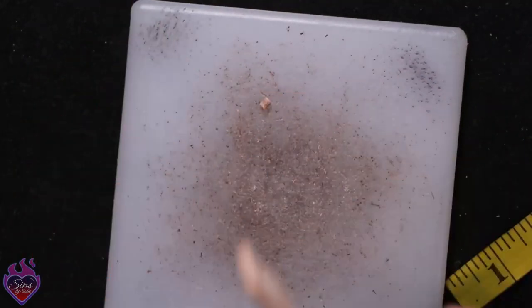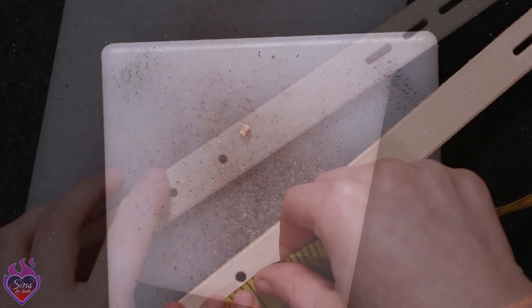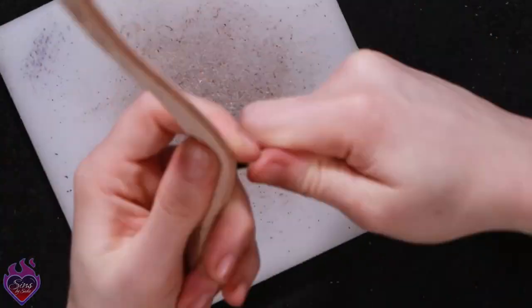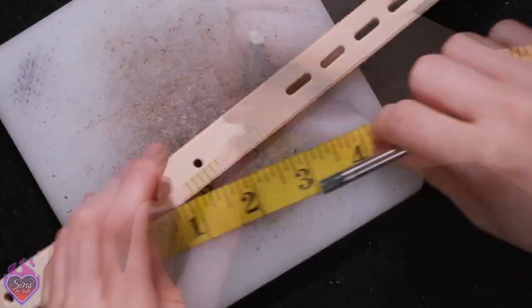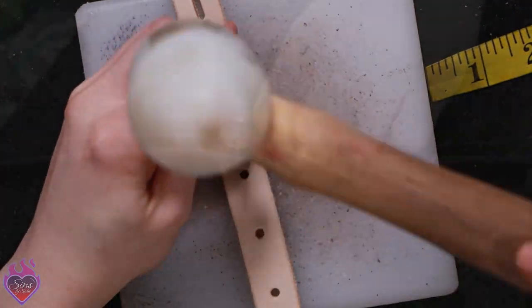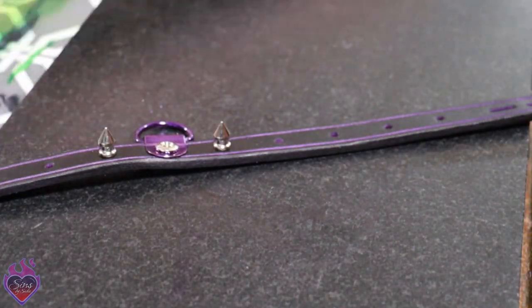First punch holes. On this collar, I had a row of spikes on either side of the center. After dying and finishing your piece, you can add your spikes.